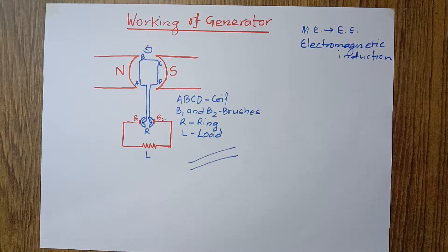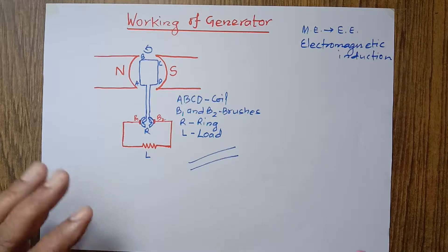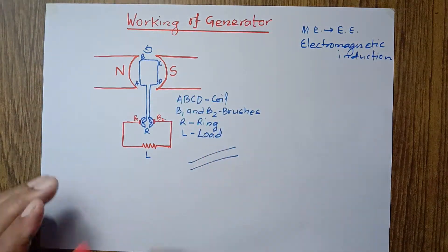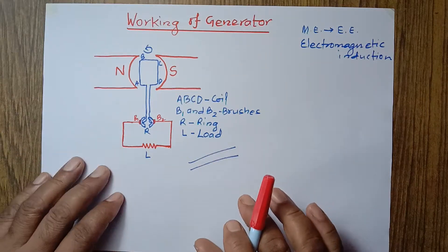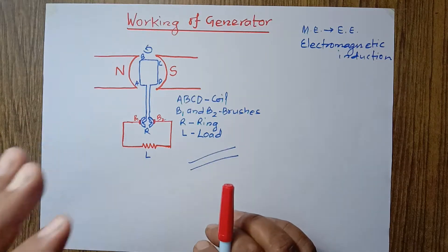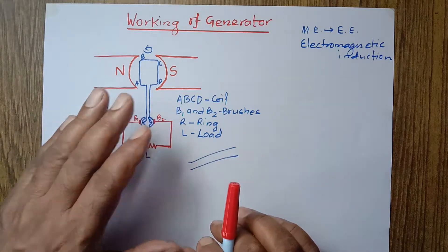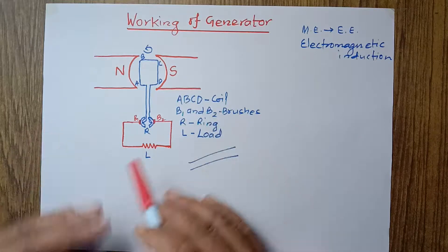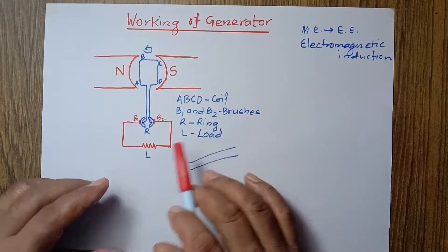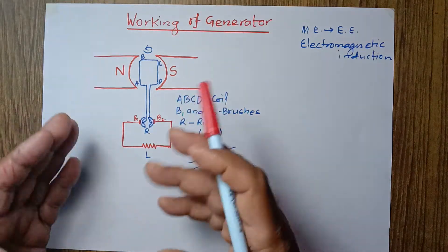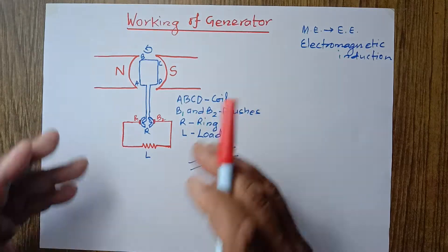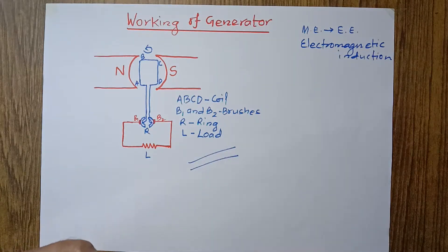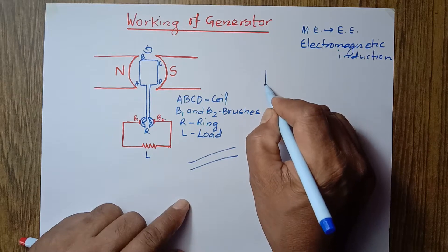In the previous class I told you about the working of a generator and its diagram and construction. But today I want to focus on another matter: how can we increase the production of electrical energy in a generator. This is our core interest — we need more and more electricity, so as far as possible a very huge amount of electrical energy should be produced. For that, there are four major methods I'm going to discuss.